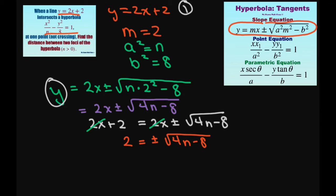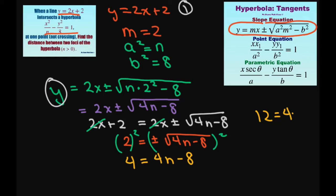Now squaring both sides, we're going to get 4 equals 4n minus 8. So when you add 8 to both sides, you're going to get 12 equals 4n. Therefore n equals 3.